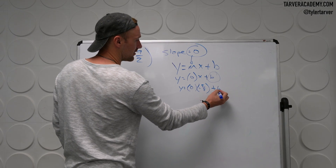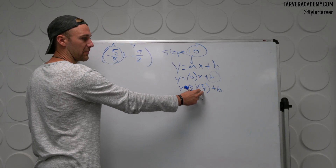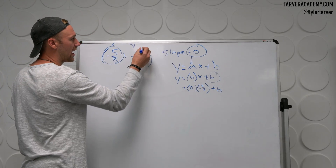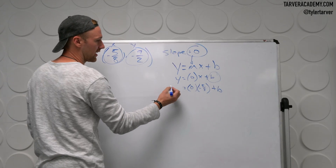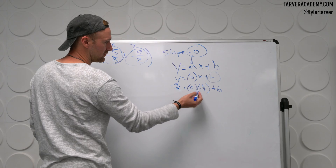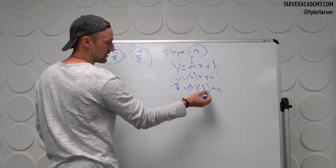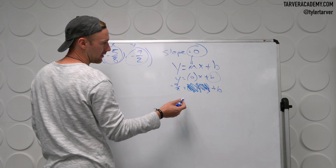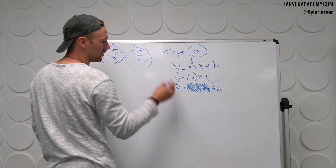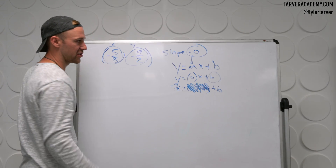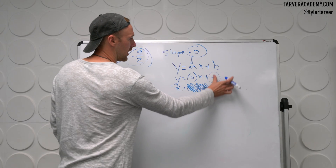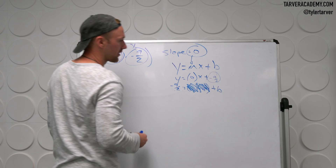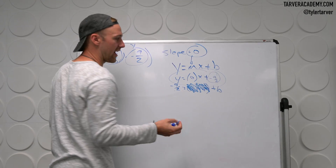Why does it feel useless to type that x in? Because it's going to be multiplied by zero. And then our y is negative nine over two. Zero times x — say bye. And so B equals negative nine over two.